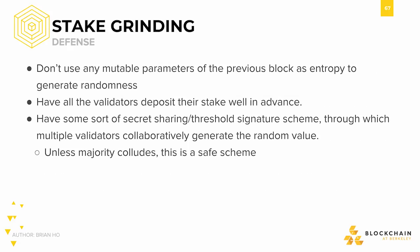There are a few ways to address this vulnerability. First, we can stop using any mutable parameters from the previous block to generate the random pick for the next validator — only parameters that miners have no control over should be used to generate randomness. We can also have all validators deposit their stake well in advance, so that individuals cannot plan on being a validator in the next round. Finally, we can have a secret sharing mechanism where multiple validators come to consensus on some random value to help pick the validator for the next round. Unless there is collusion within the majority, this strategy should work.